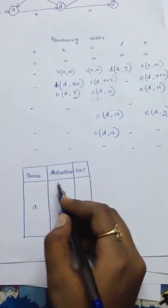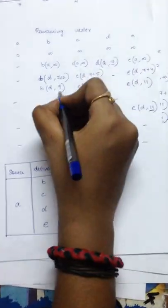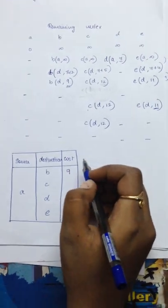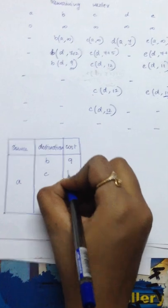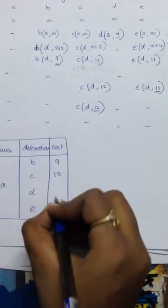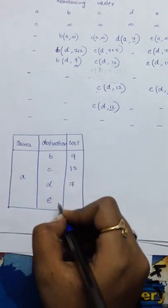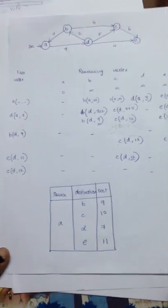From A to B, B is accessed at a rate of 9. From A to C, C is accessed at a rate of 12. From A to D, it is accessed at a rate of 7. From A to E, it is accessed at a rate of 11. This is how a Dijkstra's algorithm can be resolved.